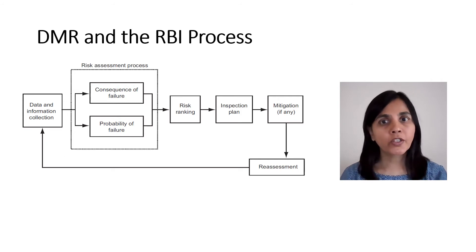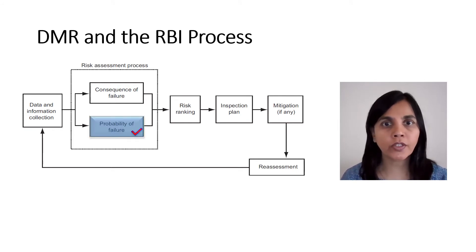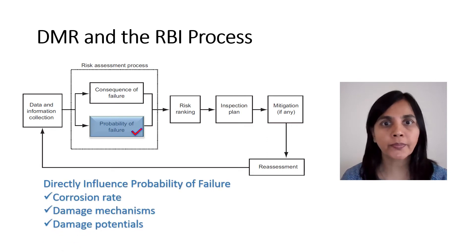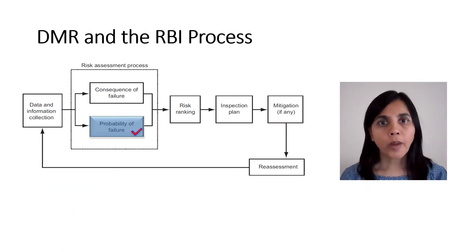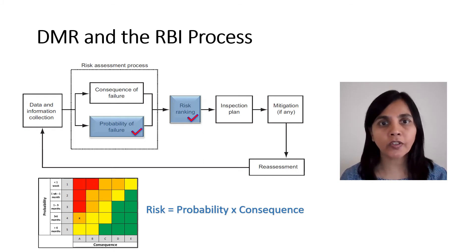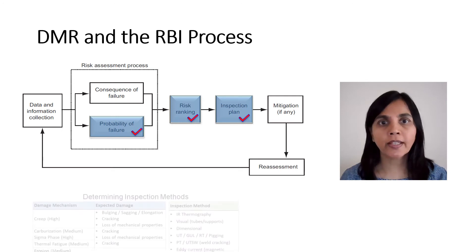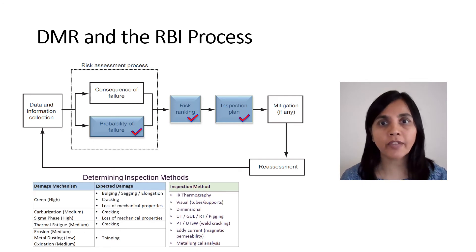So how does the DMR fit into the RBI process? Here is the schematic of the RBI process from API 580. The DMR outputs are fed directly into the probability calculation to determine the probability of failure. The probability is then combined with the consequence to determine the overall risk of the asset or component being analyzed. The risk ranking influences the inspection plan by helping to drive the frequency of inspection, the extent of inspection, and the reassessment interval. The DMR also has a direct influence on the inspection plan by providing information regarding the inspection method that should be used based on the type of damage that's expected.